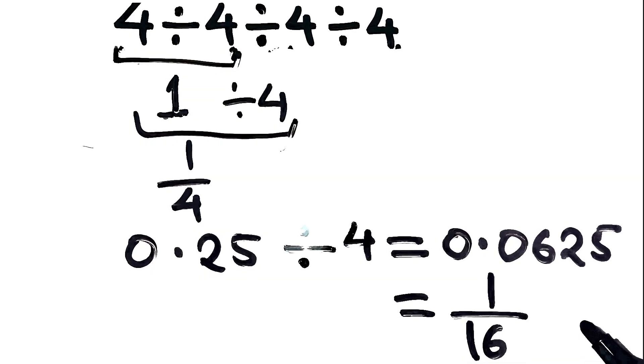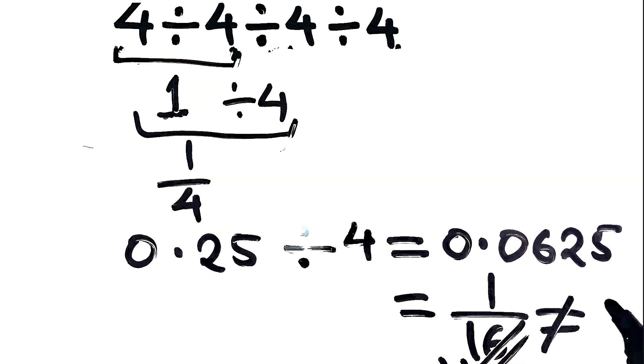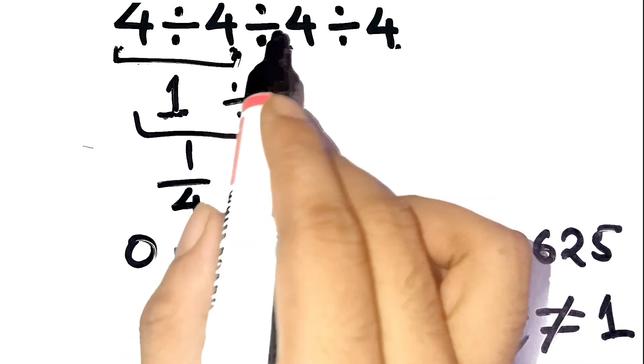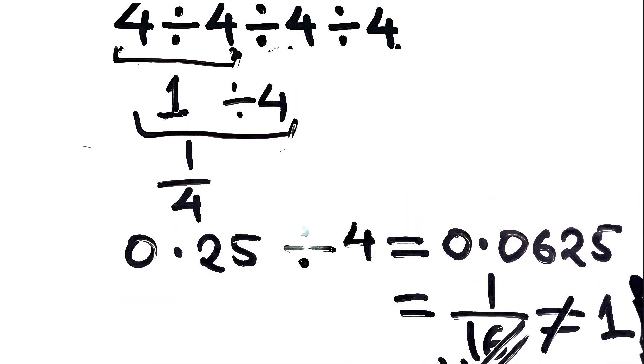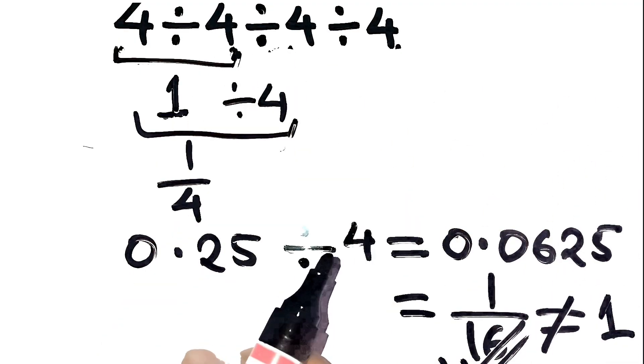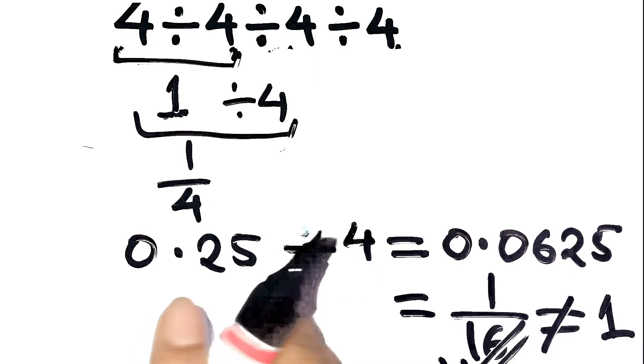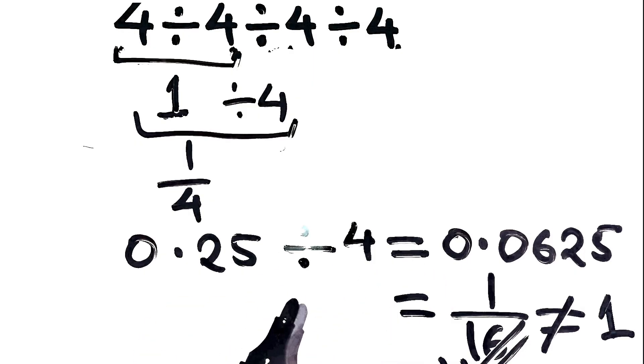So, the correct answer is 1 over 16, not 1. Pretty small, right? But that tiny change in the order you do things completely changes the result. It's wild how often people forget the left to right rule when division is repeated like this.